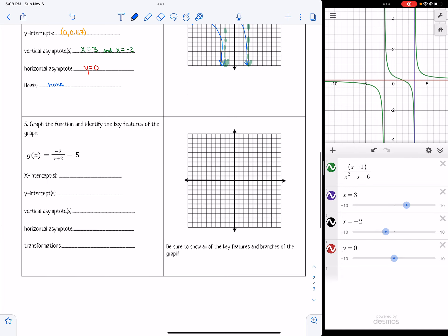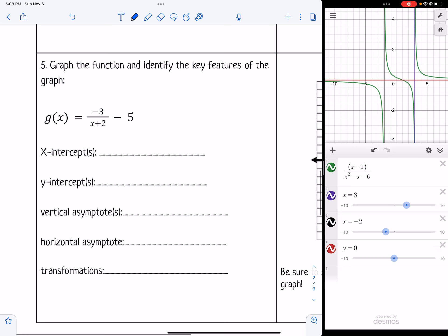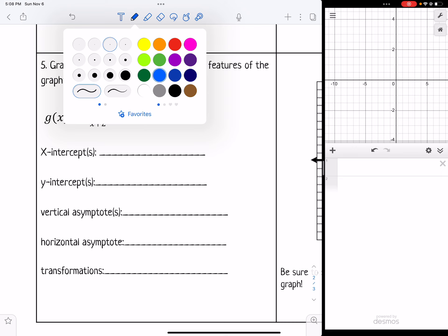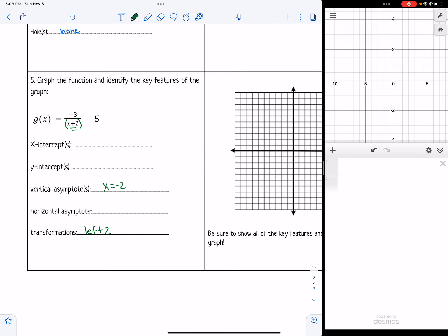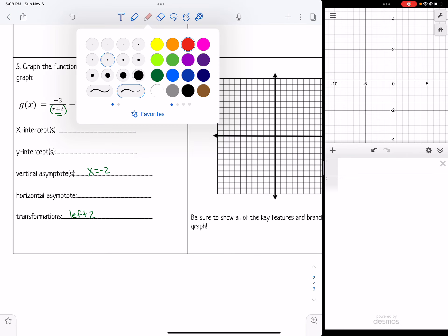And then number 5 says, graph the function and identify the key features of the graph. Well, this one is written in general form. So I'm actually able to pick some things out just by looking at it. So the vertical asymptote is tied to the left or right transformation. And I can see that this x plus 2 would make it go left 2, which would make the vertical asymptote at x equals negative 2. So I'm going to go ahead and sketch that at x equals negative 2.